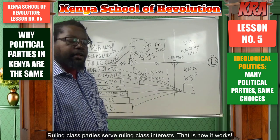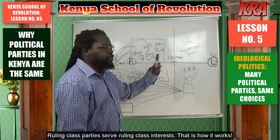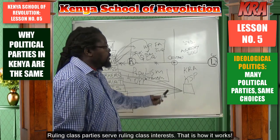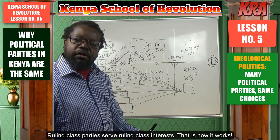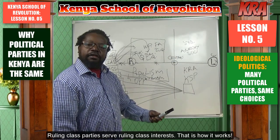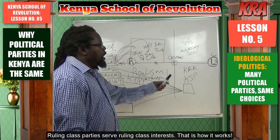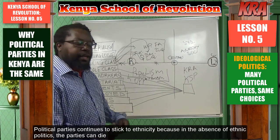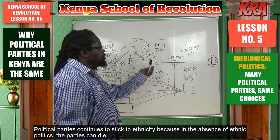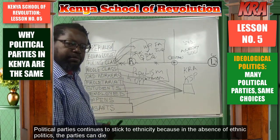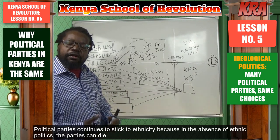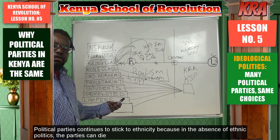For change to happen, ideological parties must enter the scene. Even if they are all capitalists, they should show us the different facets of capitalism they represent. If they are socialists, they should show the different shares of socialism they represent. We need socialists giving their ideas on how society should be run and competing with the capitalists. In Kenya, the ruling class dominates, and this explains why they continue to stick to ethnicity, benefiting from recruiting members of different ethnic groups to join them.